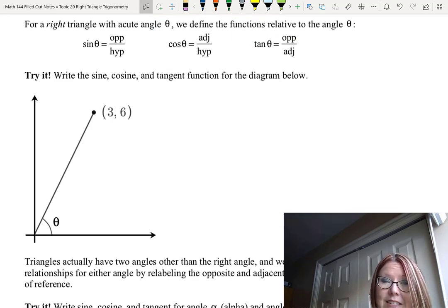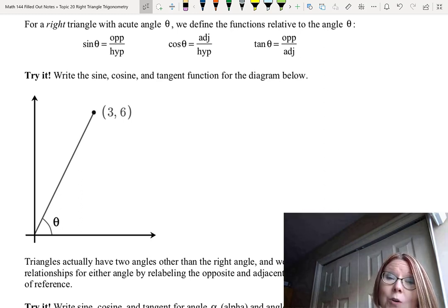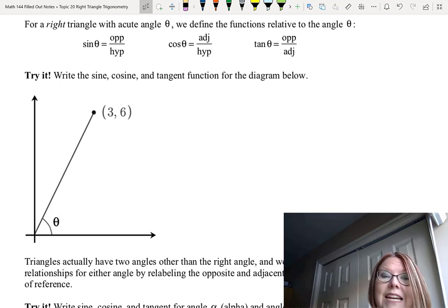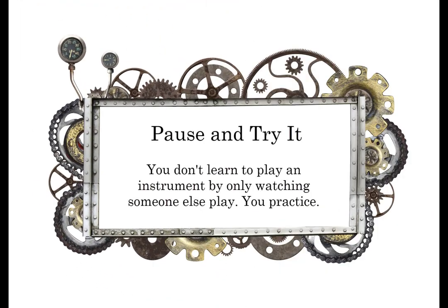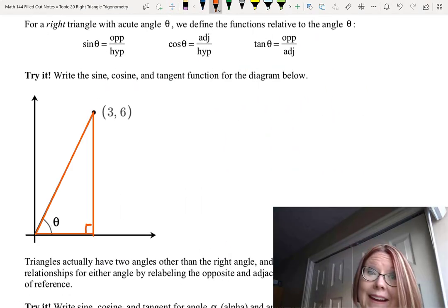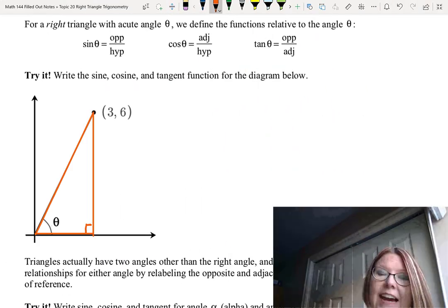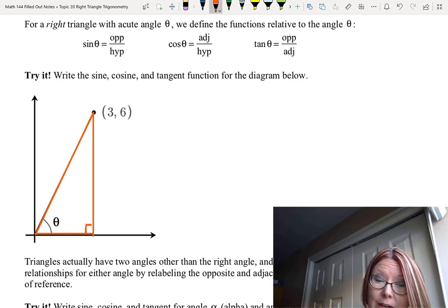There's a set of axes defining the first quadrant of the coordinate plane with a point labeled (3, 6). There's a line segment between (3, 6) and the origin (0, 0), and angle theta is marked between that line and the x-axis. Write the sine, cosine, and tangent definitions for this diagram. Pause the video and give it a try. The first thing I did was draw out that right triangle by making a perpendicular from the point (3, 6) down to the x-axis and sketching in the three sides.